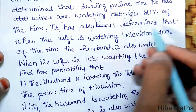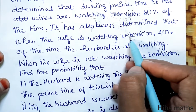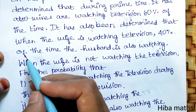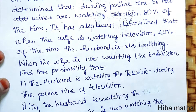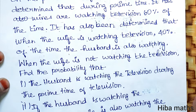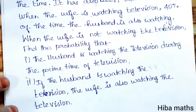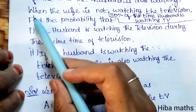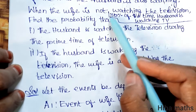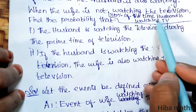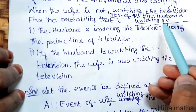It has also been determined that when the wife is watching television, 40% of the time the husband is also watching. When the wife is not watching the television, 30% of the time the husband is watching TV.